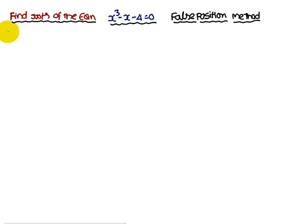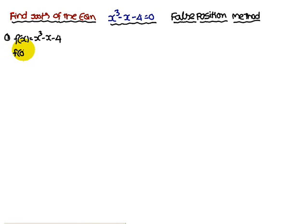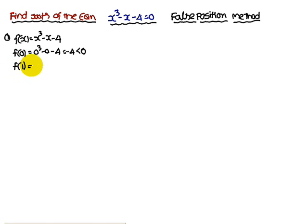The given function is f(x) = x³ - x - 4. First, substitute x = 0: you get 0³ - 0 - 4 = -4, which is a negative value. Next, substitute x = 1: you get 1³ - 1 - 4 = -4, again a negative value.